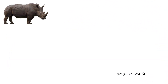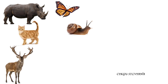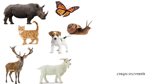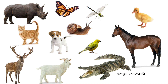We have rhinoceros, cat, deer, butterfly, snail, dog, goat, dragonfly, bird, crocodile, duck, and a horse. Let's take a look at the parts of the body.